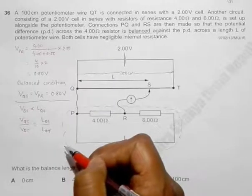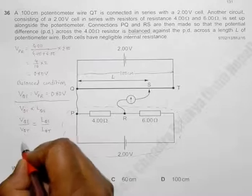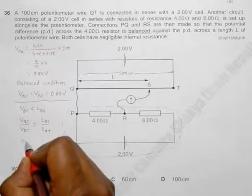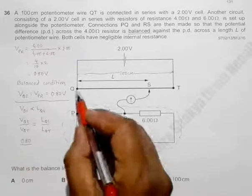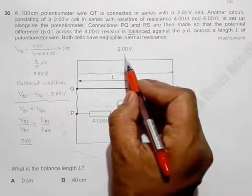Which means that we have VQS equal to 0.80 volt. We have VQT is equal to 2 volt because the internal resistance is zero, so it is 2.00.